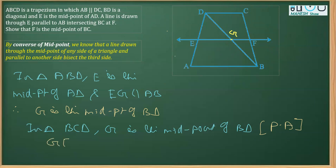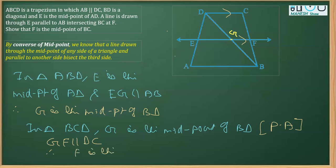GF is parallel to DC. Therefore, again by applying the converse of the midpoint theorem, we can say that F is the midpoint of BC. This is what we needed to prove, and we have proved it.